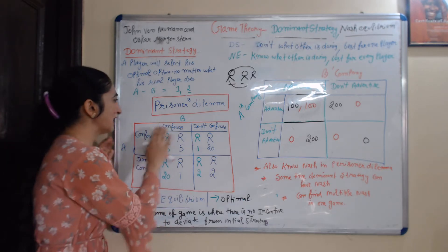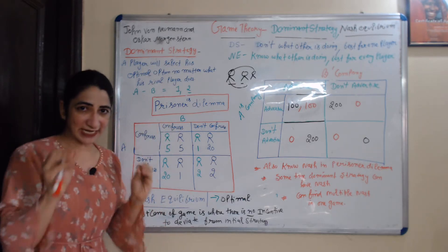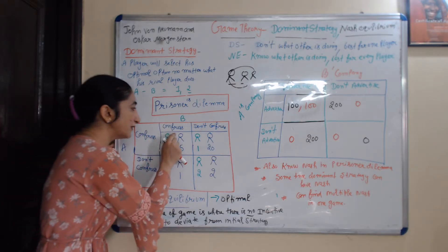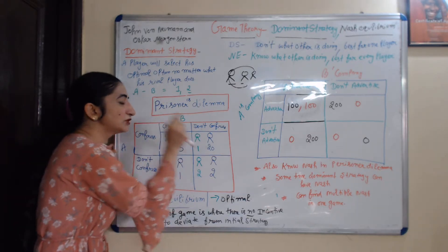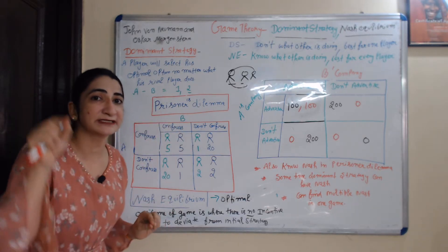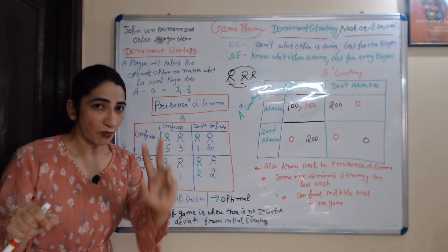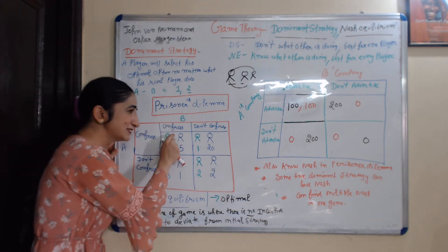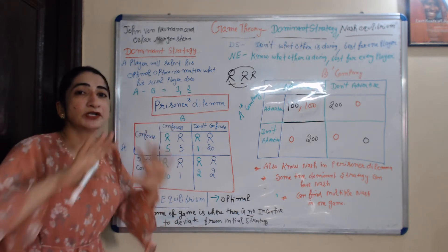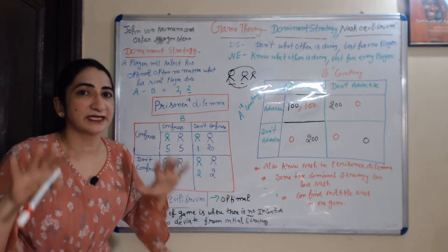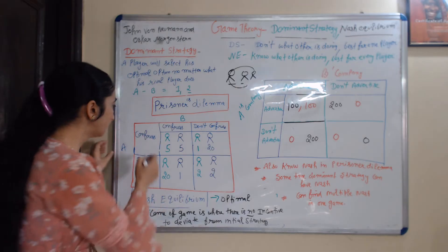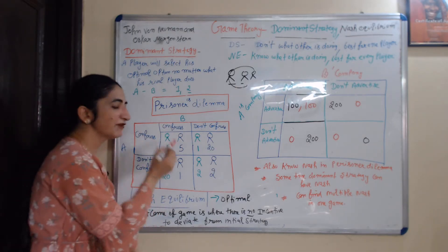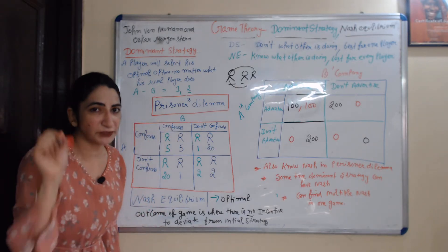Both have two options: either they confess their crime or don't confess their crime. If both confess their crime, each will get five years of punishment.